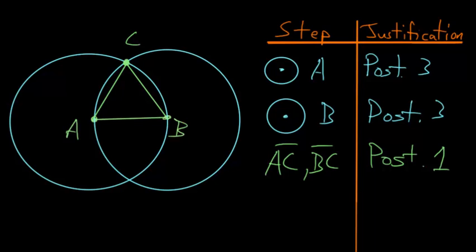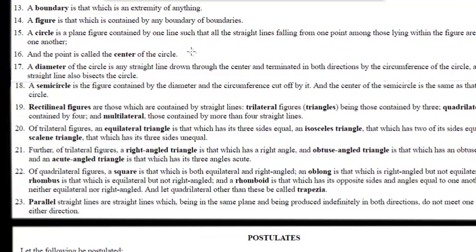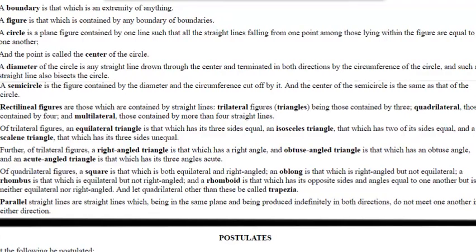Now if we focus on definition number 15 from Euclid's 23 definitions, let's take a look at this. So definition 15 describes a circle. So a circle is a plain figure contained by one line such that all the straight lines falling from one point among those lying within the figure are equal to one another.